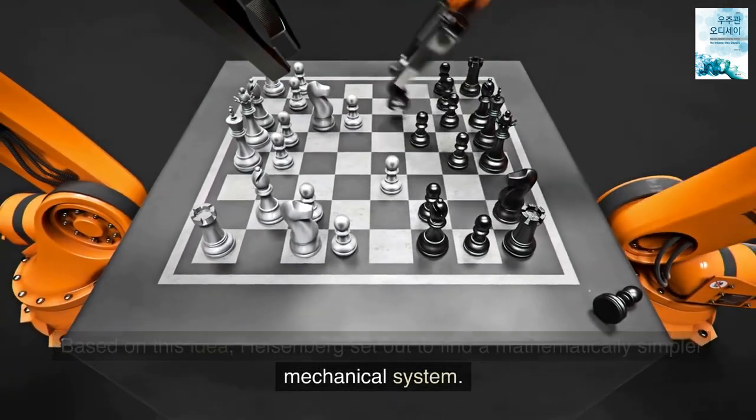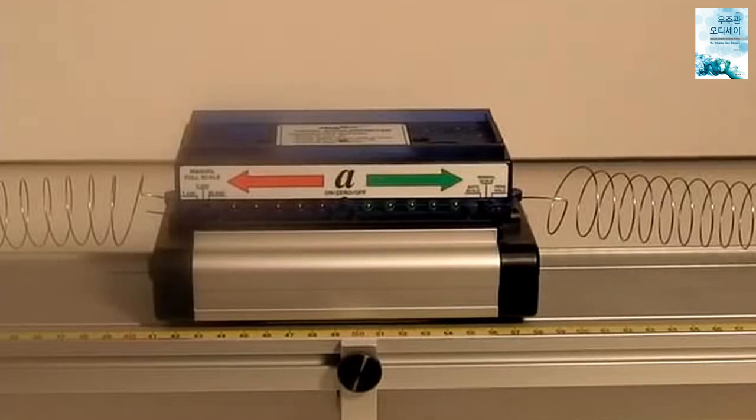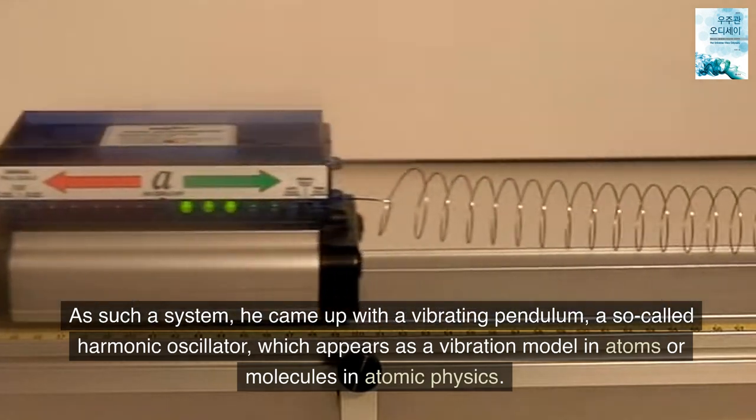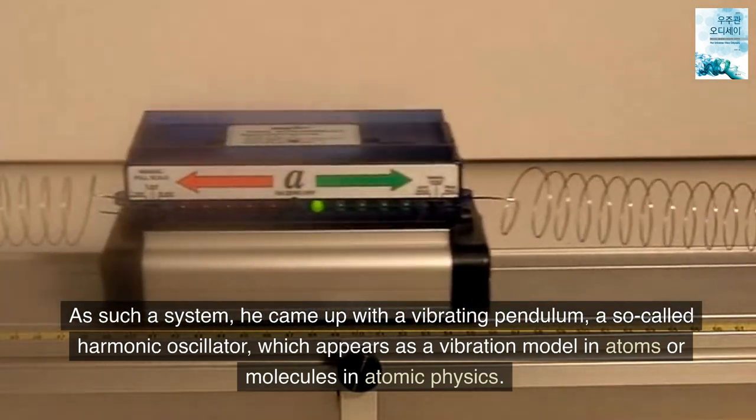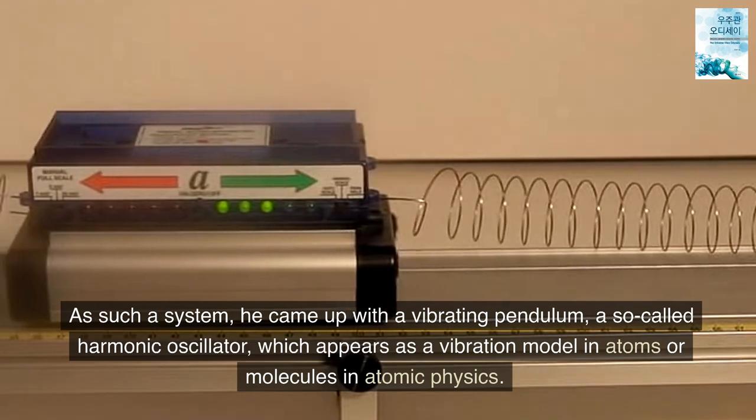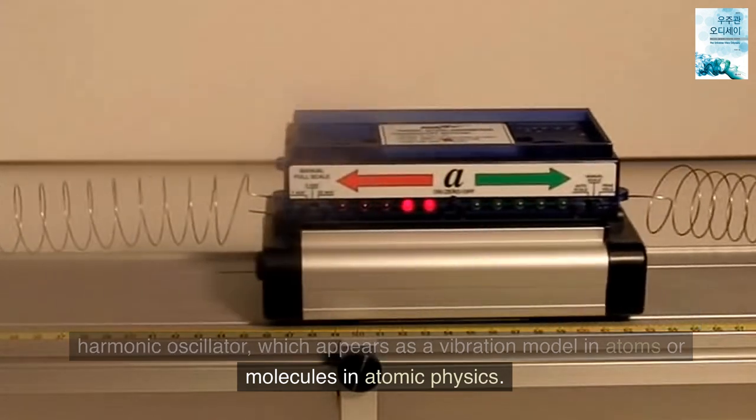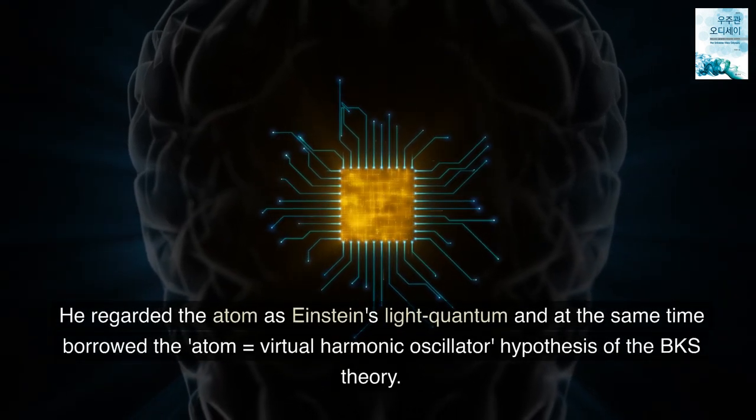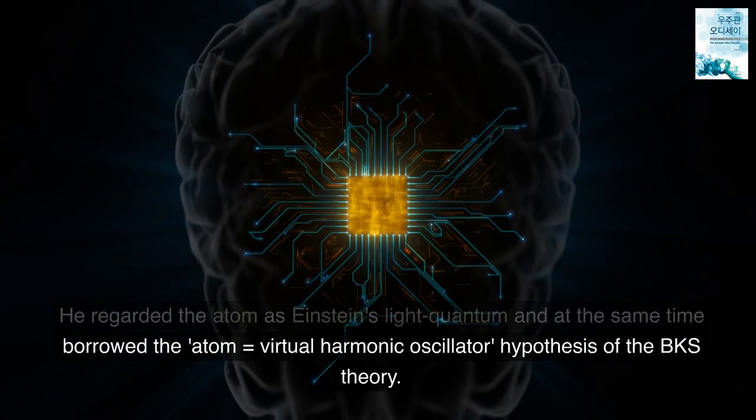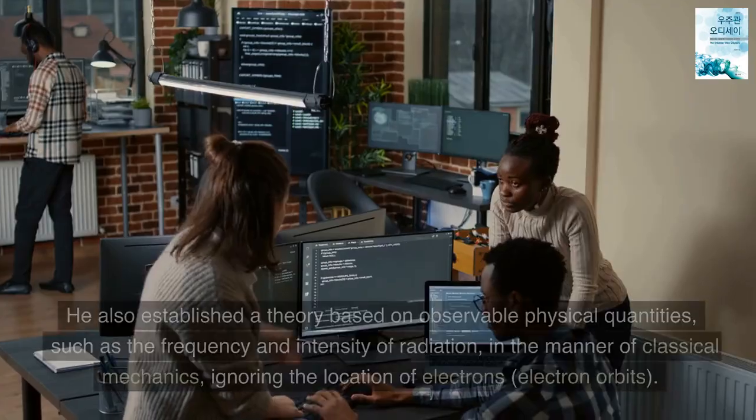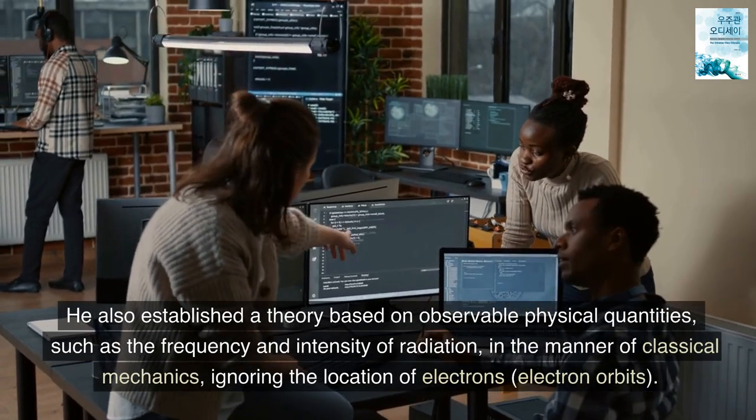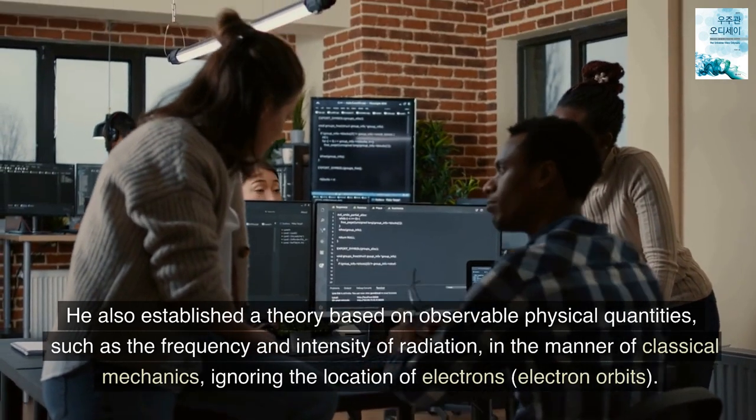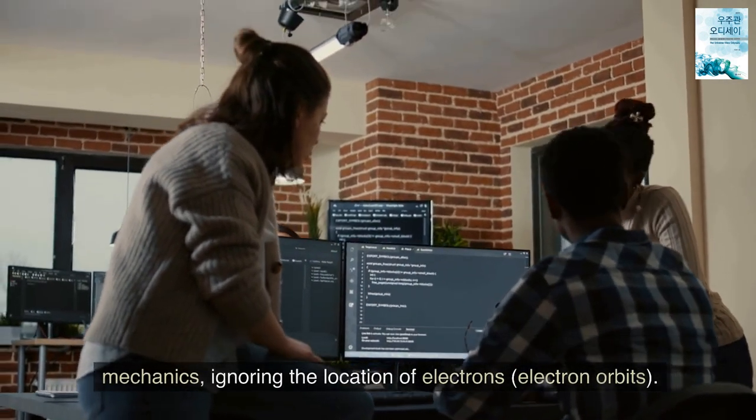Based on this idea, Heisenberg set out to find a mathematically simpler mechanical system. As such a system, he came up with a vibrating pendulum, a so-called harmonic oscillator, which appears as a vibration model in atoms or molecules in atomic physics. He regarded the atom as Einstein's light quantum and at the same time borrowed the atom equals virtual harmonic oscillator hypothesis of the BKS theory. He also established a theory based on observable physical quantities, such as the frequency and intensity of radiation, in the manner of classical mechanics, ignoring the location of electrons, electron orbits.